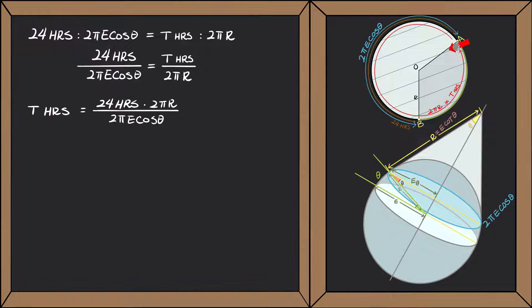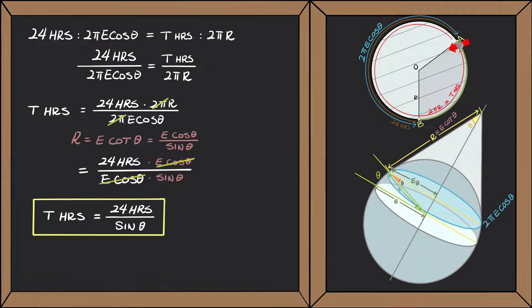Solve for t, using R equals cotangent theta, we get t equals 24 hours divided by sine theta.